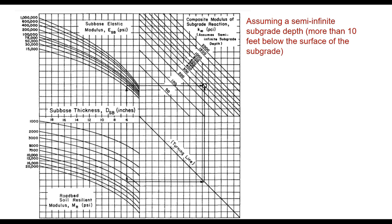This is estimated using this chart, and this chart assumes that a semi-infinite subgrade depth, that is more than 10 feet below the surface of the subgrade, exists. That is why the value which we obtain from this chart is called k_infinite.